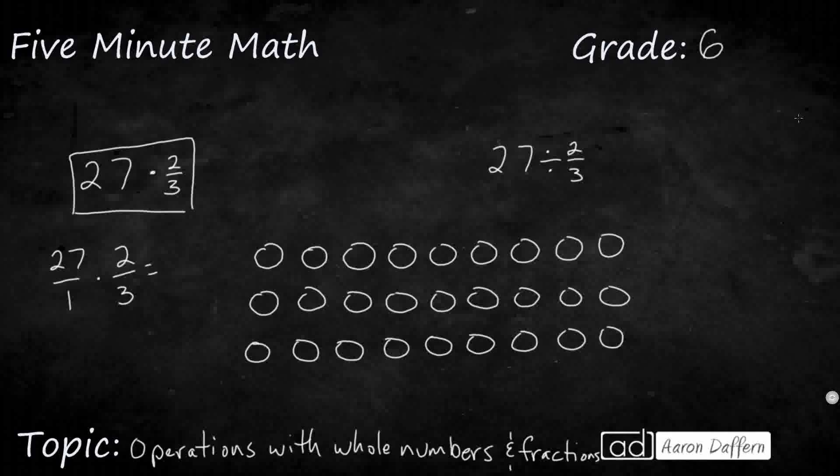I need to take twenty-seven, double it, that's going to be fifty-four. So one times three is three, so it's fifty-four-thirds. If you do the long division, that's going to be eighteen.